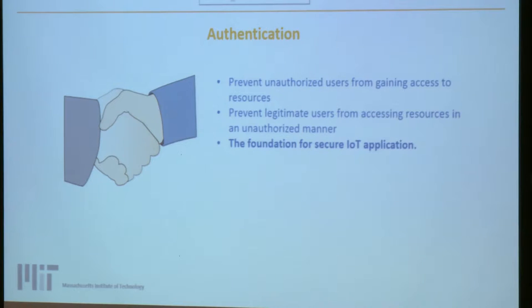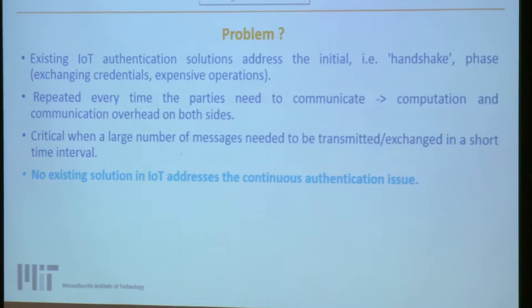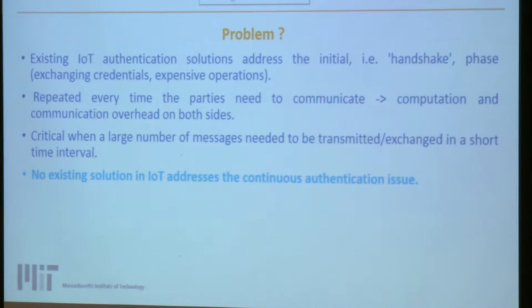Authentication is very important so each party is assured of the other's identity in a scenario of continuous message exchange, such as in smart homes, so that these attacks are minimized or prevented. Authentication prevents unauthorized users from accessing resources and also prevents legitimate users from accessing resources they are not authorized for. It is, as mentioned, the foundation of a secure internet of things application. However, existing solutions address authentication only from the handshake perspective — both parties exchange credentials such as public key certificates and perform algorithms at setup time.